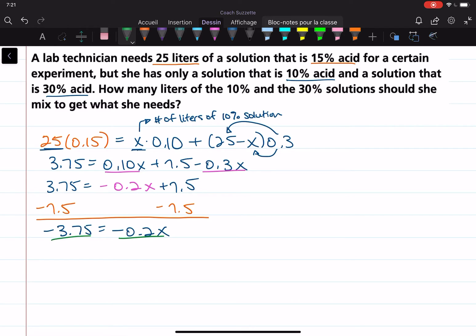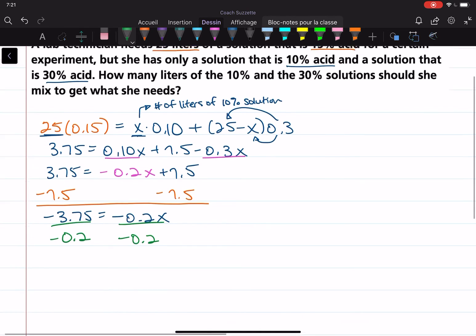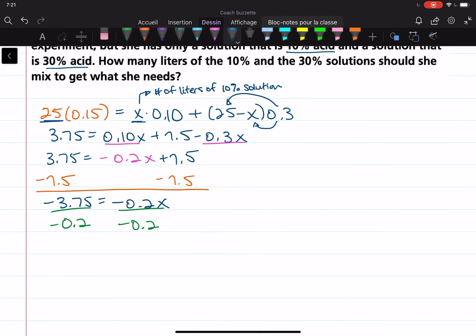Divide both sides by negative 0.2. So negative 3.75 divided by negative 0.2 is equal to—X is equal to 18.75. What does X mean again? X means the number of liters of 10% solution.